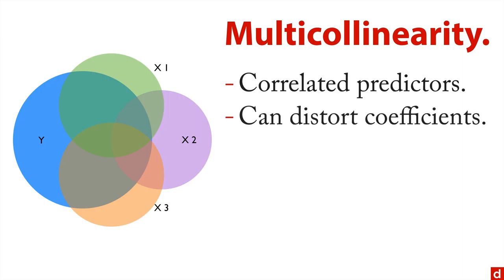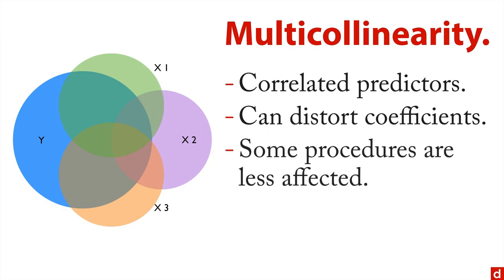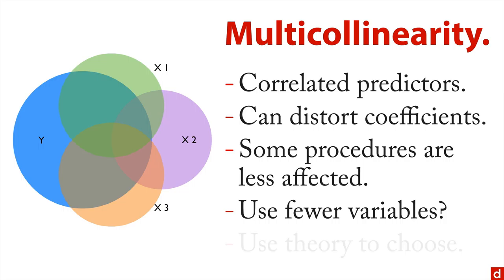Then there's the issue of multicollinearity, which I've mentioned previously. This is when you have correlated predictors, or rather the predictors themselves are associated with each other. The problem is this can distort the coefficients you get in your overall model. Some procedures are less affected by this than others. But one overall way of using this might also simply be to try to use fewer variables. If they're really correlated, maybe you don't need all of them.